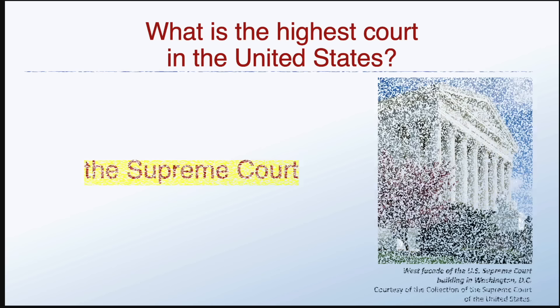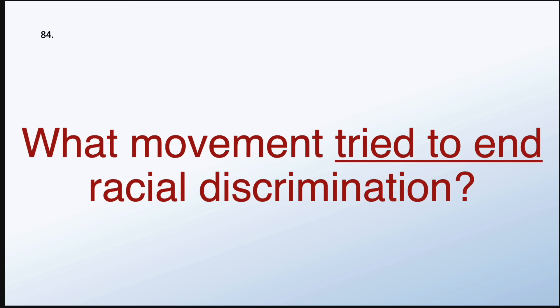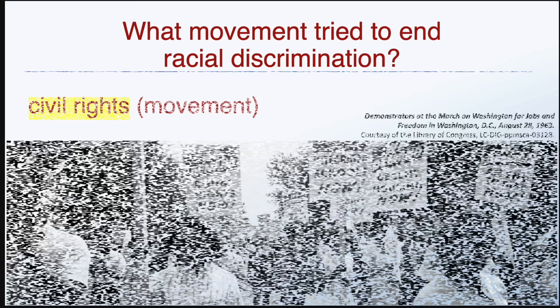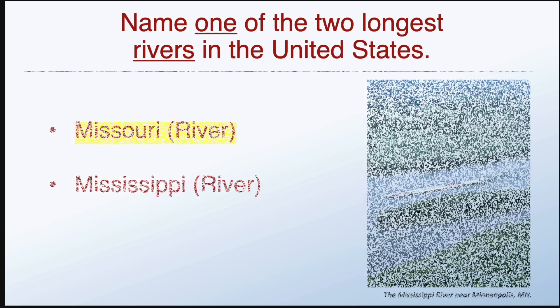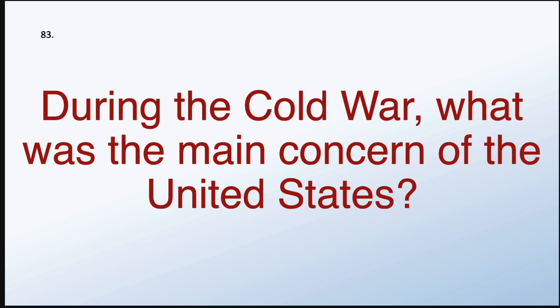What is the highest court in the United States? The Supreme Court. What movement tried to end racial discrimination? The Civil Rights Movement. Name one of the two longest rivers in the United States. Missouri. During the Cold War, what was the main concern of the United States? Communism.